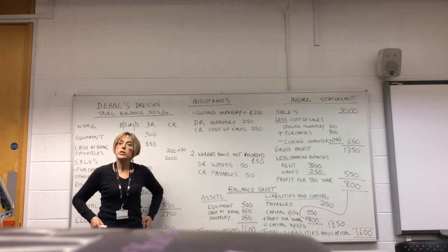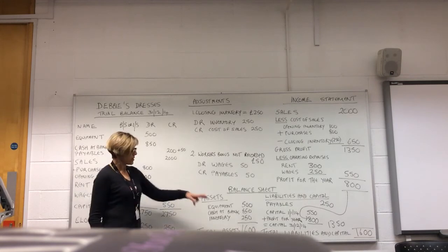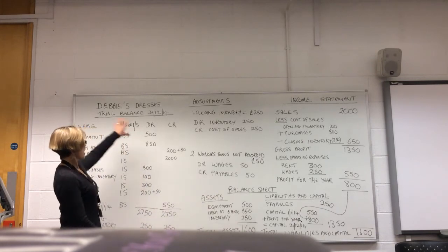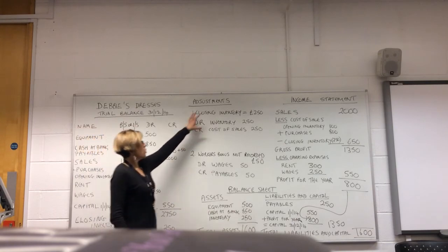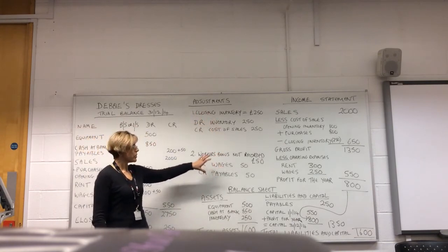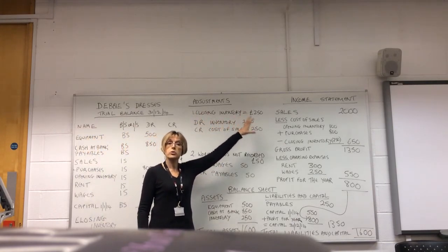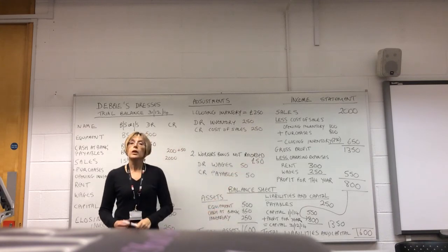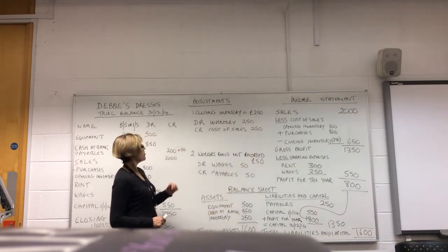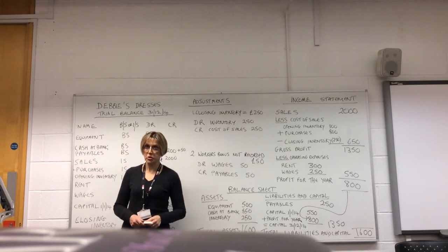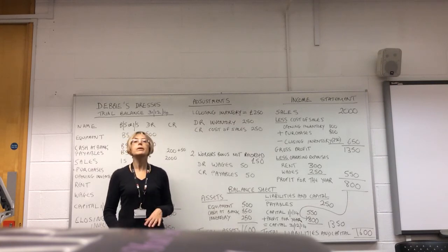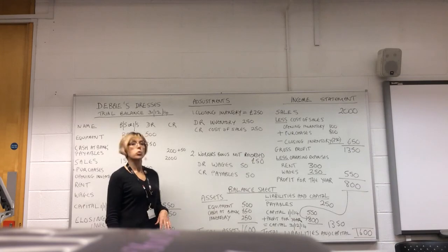So you can see that the total of our assets — £1,600 — is equal to the total of our liabilities and capital. And that's the accounting equation: assets equals liabilities and capital. So that's how you deal with a simple trial balance with some adjustments and transform those into an income statement and a balance sheet. This is the last of my videos on double entry bookkeeping. Next time we'll be starting a completely different topic. Thanks very much for watching.